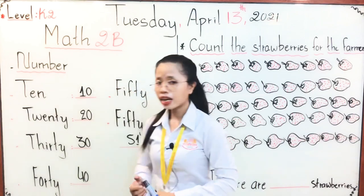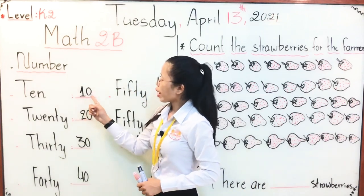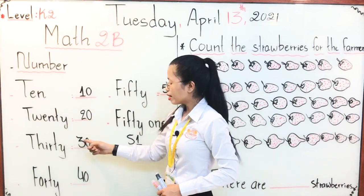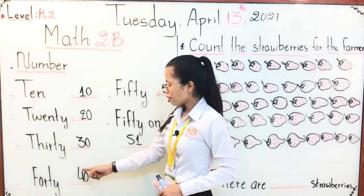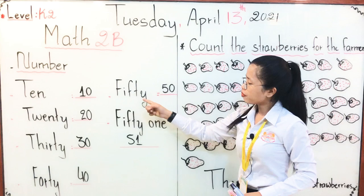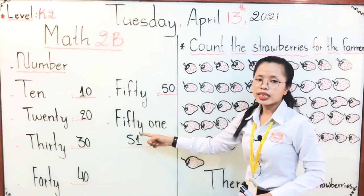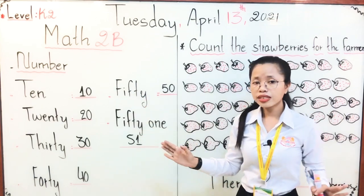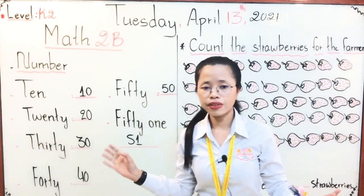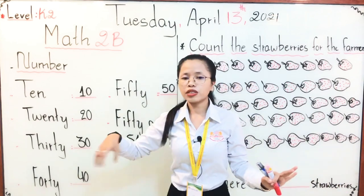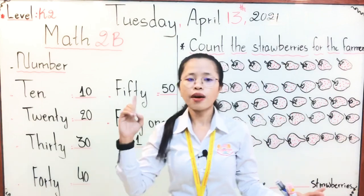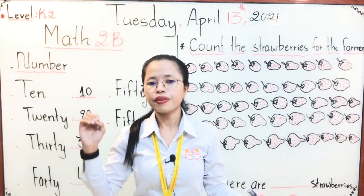Now let's practice all together. Ready? Start together: 1 and 0 is number 10, 2 and 0 is number 20, 3 and 0 is number 30, 4 and 0 is number 40, 5 and 0 is number 50, 5 and 1 is number 51. When you stay home, please try to review the numbers from number 1 to number 51.